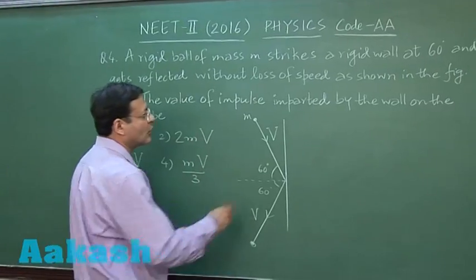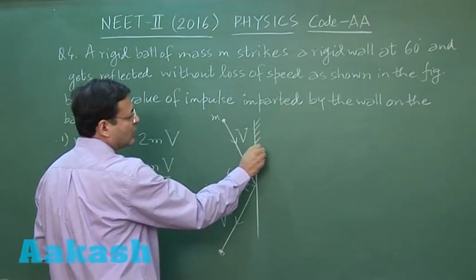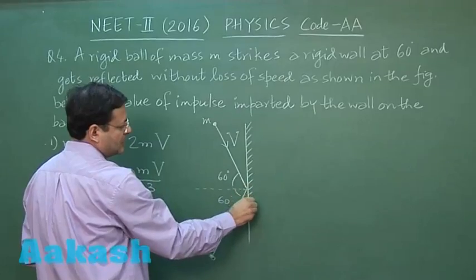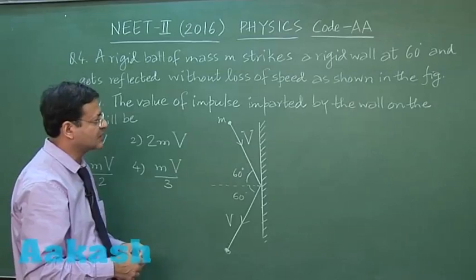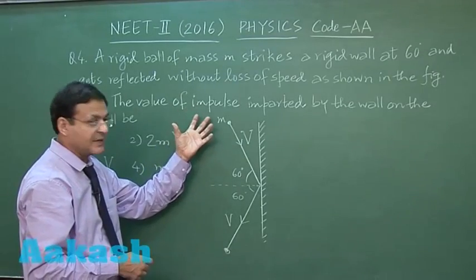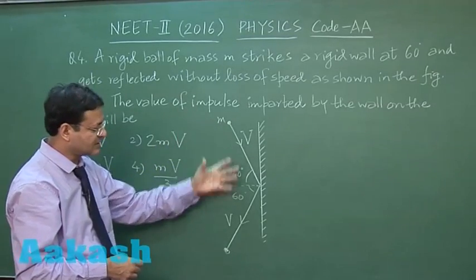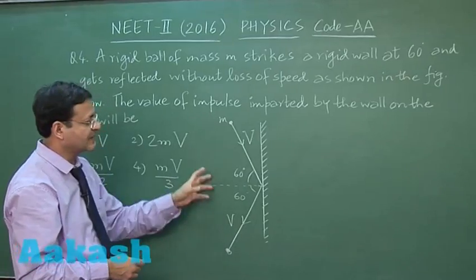You can see here this is a vertical wall. This is a vertical wall given to you in which a ball is striking and this kind of collision you can say is a very elastic one.